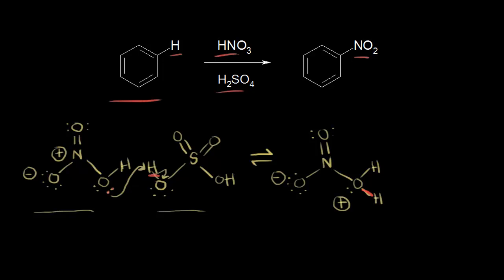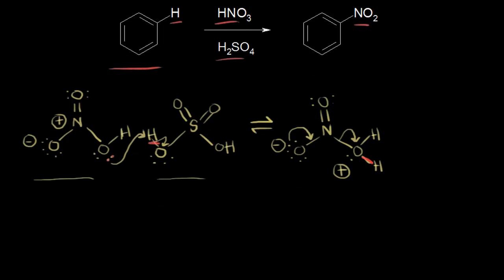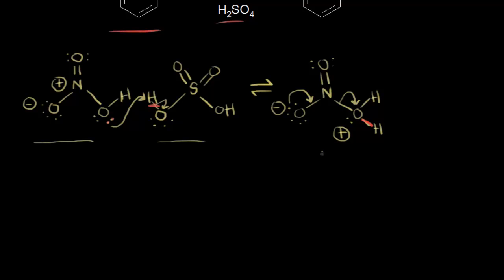That forms water as a leaving group. If these electrons move in, that kicks these electrons off onto the oxygen. So water leaves — H2O over here on the right. These electrons in magenta are the ones that came off onto the water molecule. Water is our leaving group.